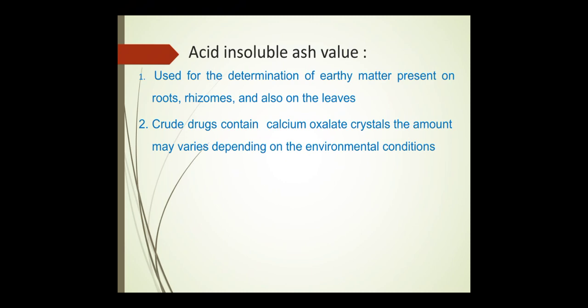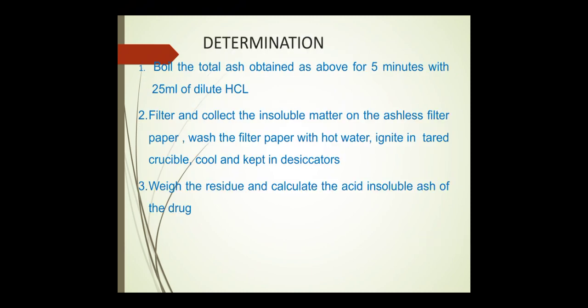Acid insoluble ash is used for the determination of earthy matter present on roots, rhizomes, and leaves. Crude drugs contain calcium oxalate crystals, the amount of which may vary depending upon environmental conditions. To determine it, boil the total ash for 5 minutes with 25 ml dilute HCl. Filter and collect the insoluble matter on ashless filter paper, wash with hot water, ignite in a tarred crucible, cool in a desiccator, weigh the residue, and calculate the acid insoluble ash.